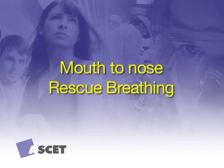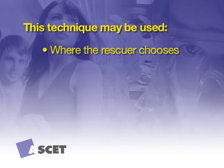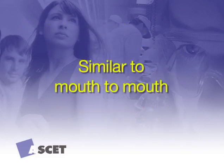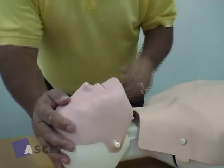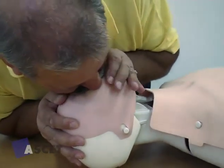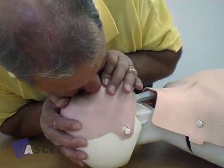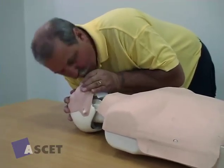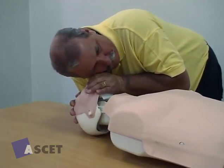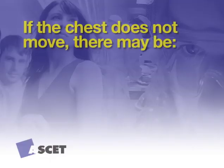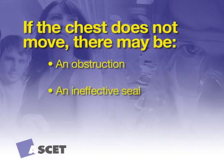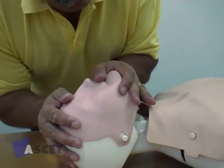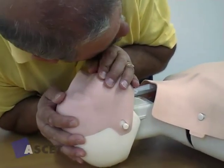Mouth to nose rescue breathing. The mouth to nose method may be used where the rescuer chooses, the victim's jaws are tightly clenched, or when rescuing infants and small children. The technique for mouth to nose is the same as for mouth to mouth except for sealing the airway. Close the victim's mouth with the hand supporting the jaw and push the lips together with the thumb. Take a breath and place your widely open mouth over the victim's nose — or mouth and nose in infants if possible — and blow to inflate the victim's lungs. Lift the mouth from the victim's nose and look for the fall of the chest. Listen and feel the escape of air from the nose and mouth. If the chest does not move, there is an obstruction, an ineffective seal, or insufficient air being blown into the lungs. In mouth to nose resuscitation, a leak may occur if the rescuer's mouth is not open sufficiently or if the victim's mouth is not sealed adequately.